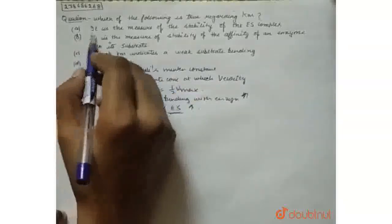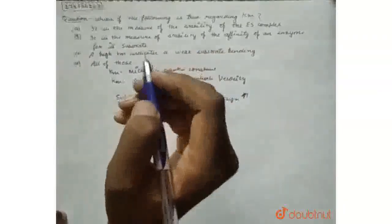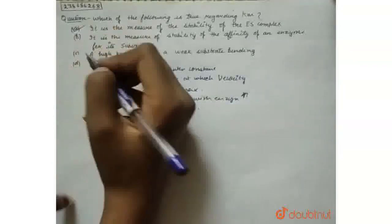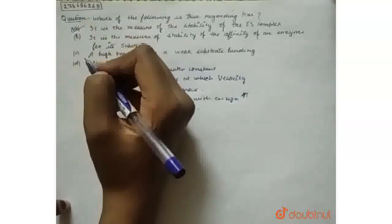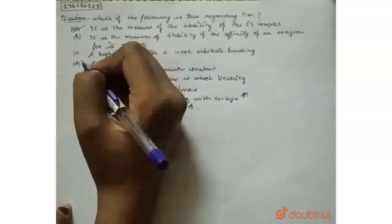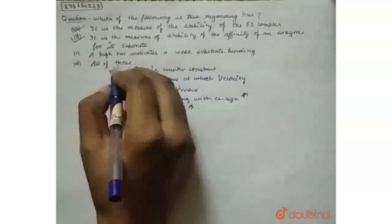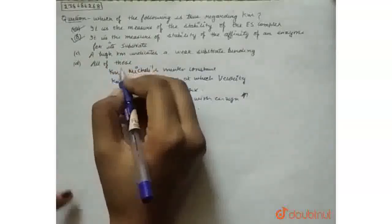So option A, it is a measure of stability of ES complex, it is correct. And this is the measure of stability and affinity of an enzyme for the substrate, it is also correct. So high KM indicates a weak substrate binding.